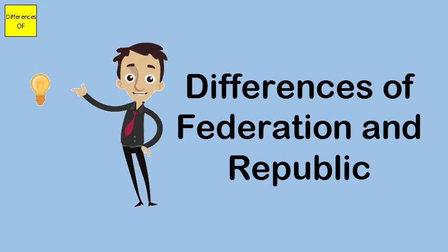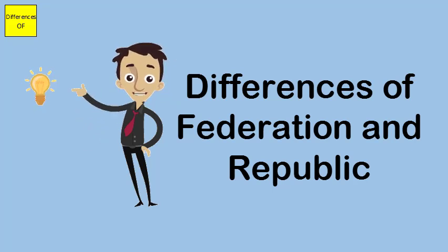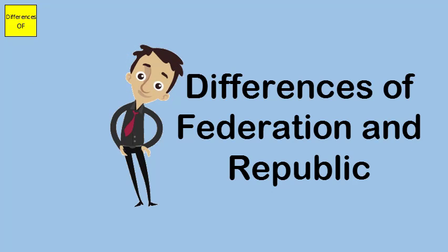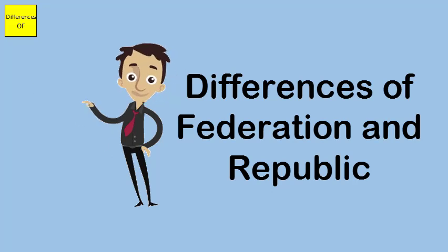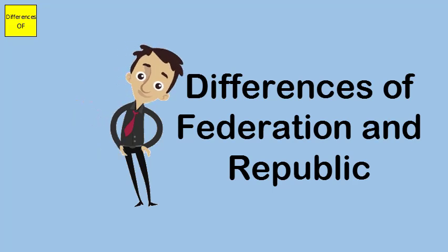Similarities: both federation and republic are a form of government. Both indicate an association of individual states, and both have a central government. Both also have a constitution clearly defining the powers and duties of the units and the central government.